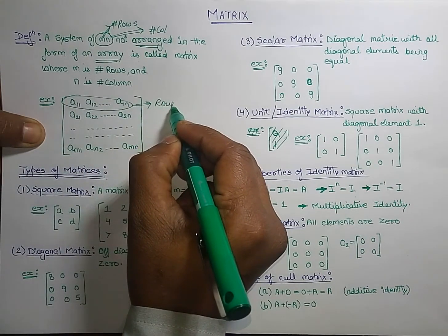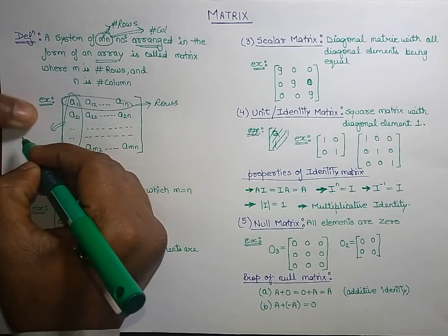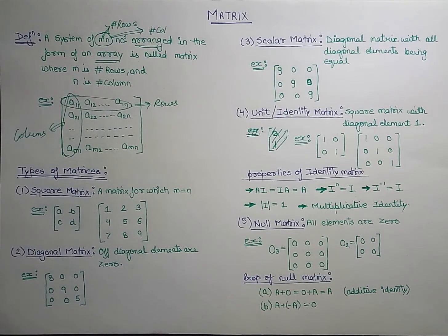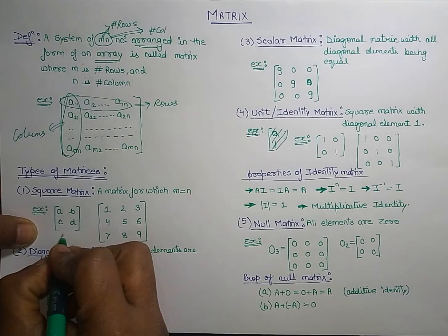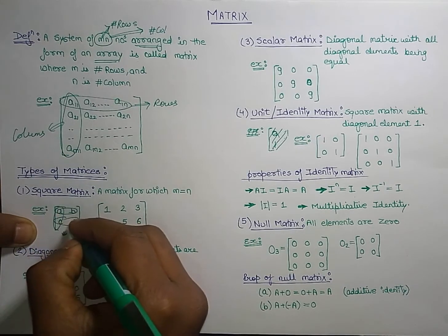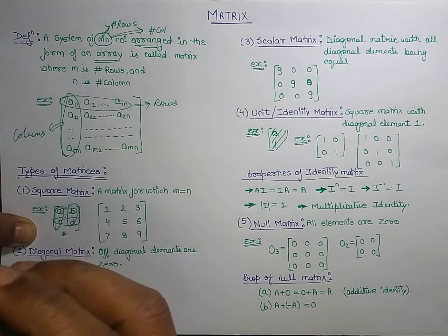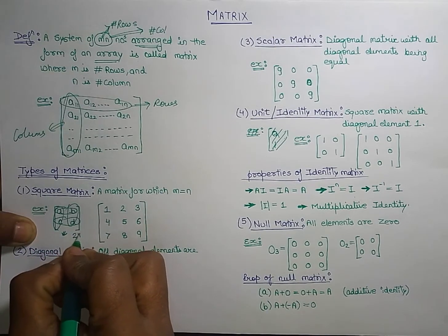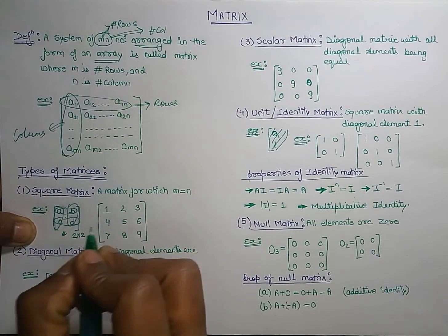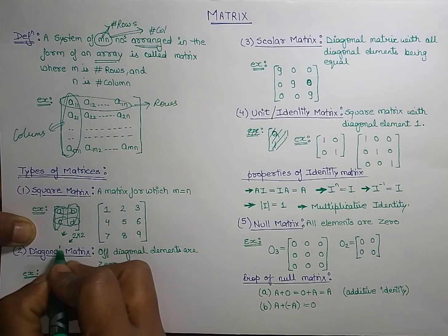These horizontal lines are known as rows and these vertical lines are known as columns. Now let's move on to types of matrices. First is the square matrix. A square matrix means there has to be an equal number of rows and equal number of columns. For example, in this matrix there are two rows and two columns, so this matrix is of size two by two.